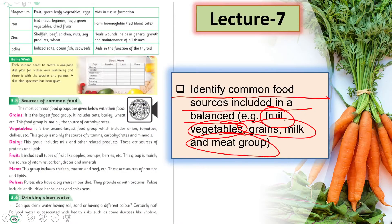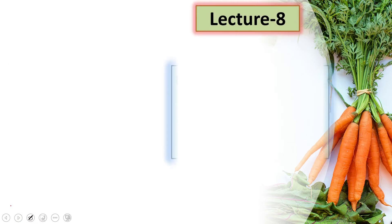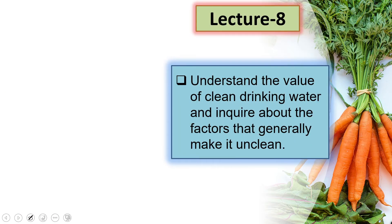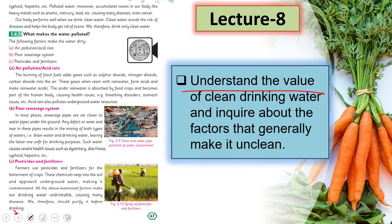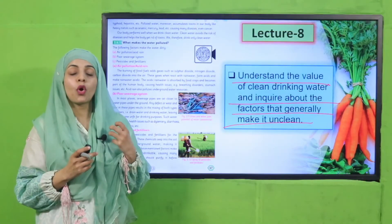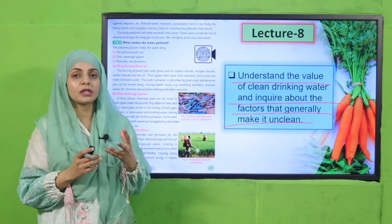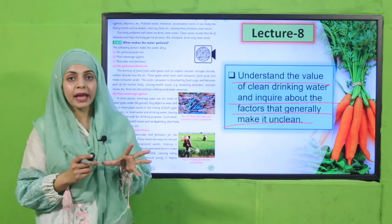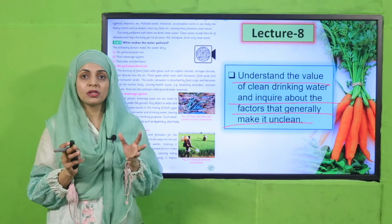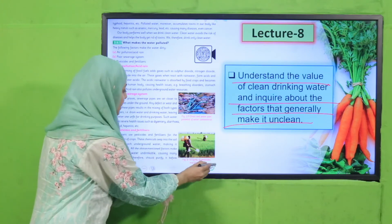In Lecture Number 8, students will be able to understand the value of clean drinking water and inquire about the factors that generally make it unclean. How much clean water is necessary for our health, and if water is not clean, how diseases spread — which factors make it unclean — we will discuss in lecture number 8. The page is page number 47.